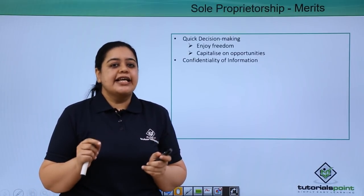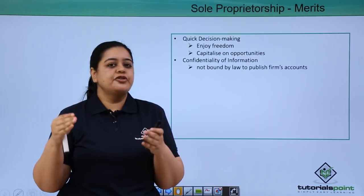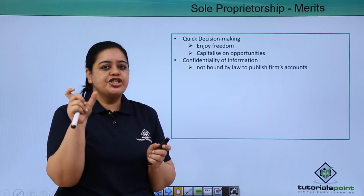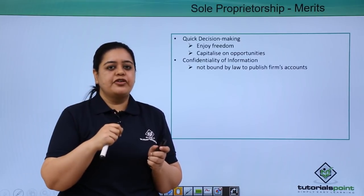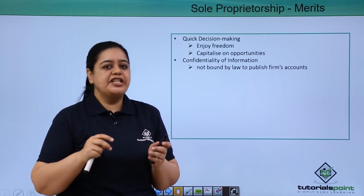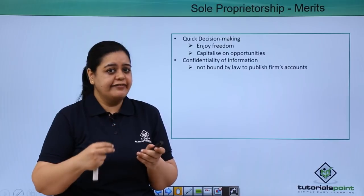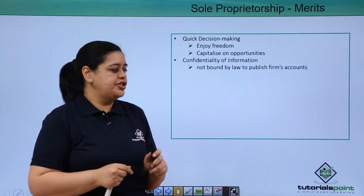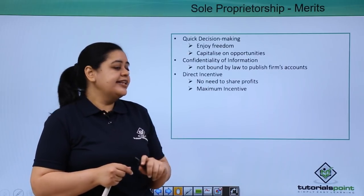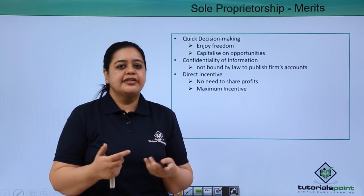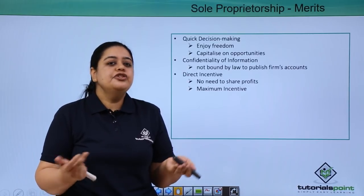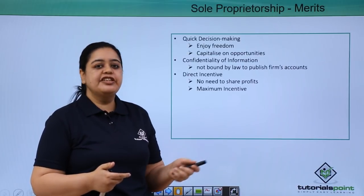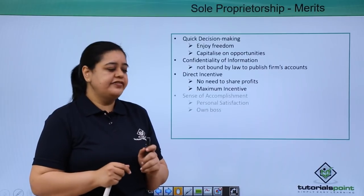The next merit is confidentiality of information. A sole proprietorship is not required to publish its books of accounts — they are not publicly available — so confidentiality of information remains. In other forms like a company, annual reports must be published, and competitors can take advantage of that information. This problem does not exist in sole proprietorship. Next is direct incentive: because she is the sole owner and risk bearer, she doesn't need to share profits with anyone else and gets the maximum incentive.